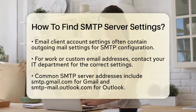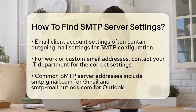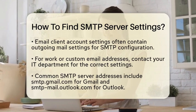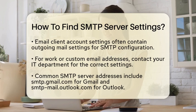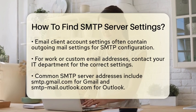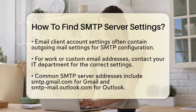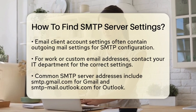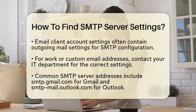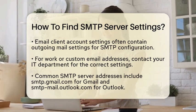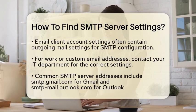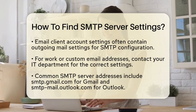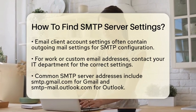Another great place to look is in your email client's account settings. If you are using an application like Outlook, Apple Mail, or Thunderbird, navigate to the Account Settings or Preferences section. There, you will find an option for outgoing mail settings where you can view or edit your SMTP configuration.